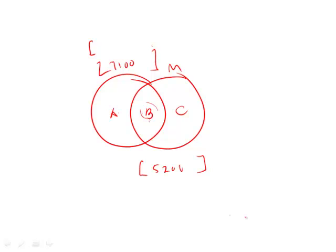Now, the way to determine the overlap is to add these two numbers together and see how much over that is the total number, which is 9,300. So we add 7,100 plus 5,200, we get 12,300. Therefore, the overlap is 3,000.